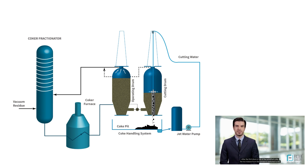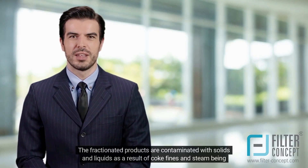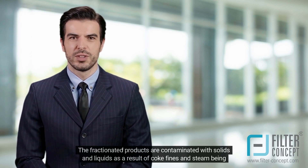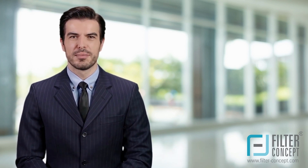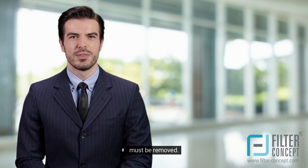After the first drum is full of solidified coke, the hot mixture from the furnace is switched to the second drum. While the second drum is filling, the filled first drum is steamed out to reduce the hydrocarbon content of the petroleum coke and then quenched with water to cool it. The top and bottom heads of the full coke drum are removed, and the solid petroleum coke is cut from the coke drum with a high-pressure water nozzle, where it falls into a pit for reclamation to storage. The fractionated products are contaminated with solids and liquids as a result of coke fines and steam being injected.